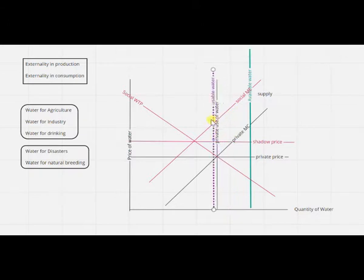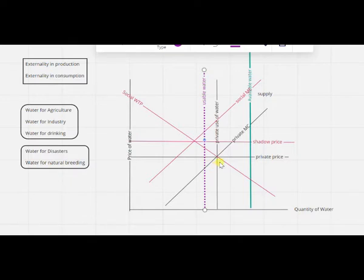Imagine that this particular amount, which is usable water, is here. If the usable water is here, that means under the current market price, what is happening is we are over-producing and we are reducing the services of nature.